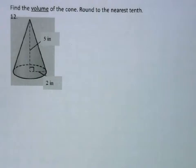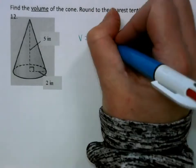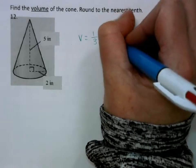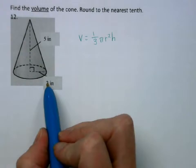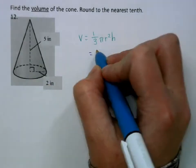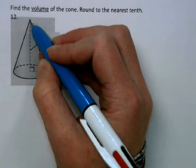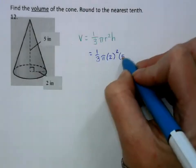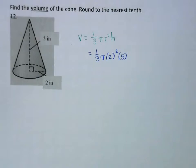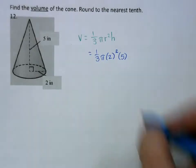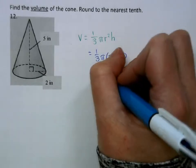For a cone, the volume is one third πr²h. The radius is 2 and the height is 5 — make sure it's the height and not the slant height; if it's written on the edge it's the slant height and you'd need the Pythagorean theorem, but we didn't need to here. So this is 20.9 inches cubed.